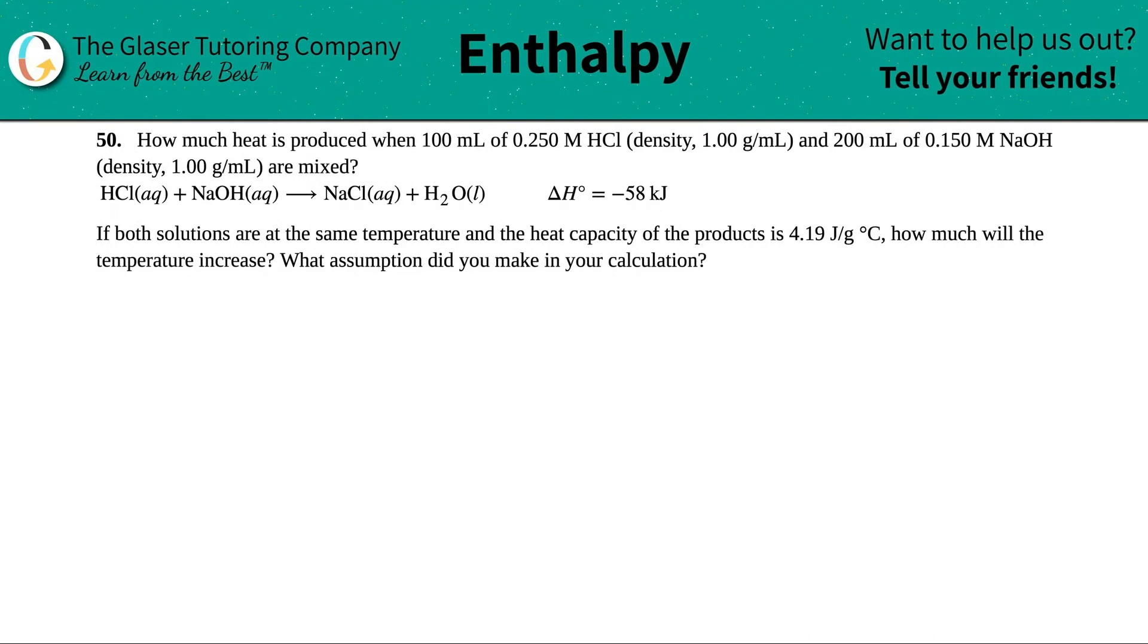Number 50, how much heat is produced when 100 mils of 0.25 molarity HCl with a density of 1.00 grams per mil and 200 mils of 0.15 molarity NaOH with the density of 1.00 grams per mil are mixed? They give us the balanced equation. Hydrochloric acid HCl plus sodium hydroxide NaOH. When they get mixed together, we get a salt, sodium chloride, aka table salt, and water.